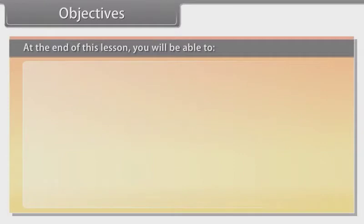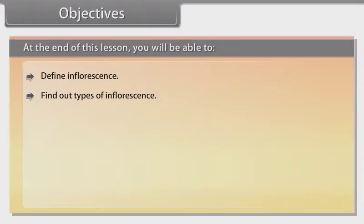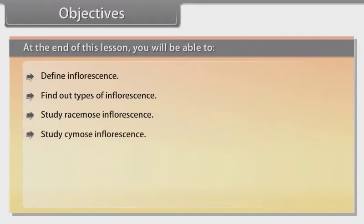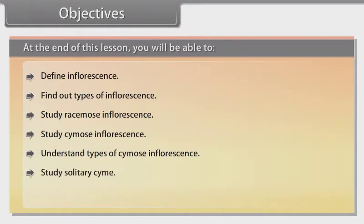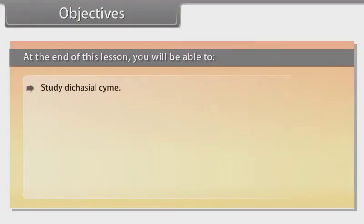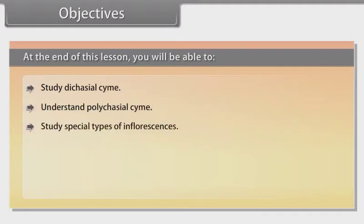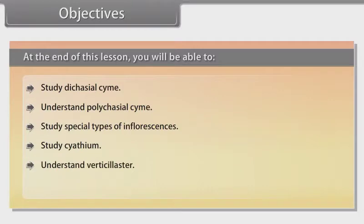Objectives: At the end of this lesson you will be able to define inflorescence, find out types of inflorescence, study racemose inflorescence, study cymose inflorescence, understand types of cymose inflorescence, study solitary cyme, understand monocasial cyme, study dicasial cyme, understand polycasial cyme, study special types of inflorescences including cyathium, verticillaster, and hypanthodium.